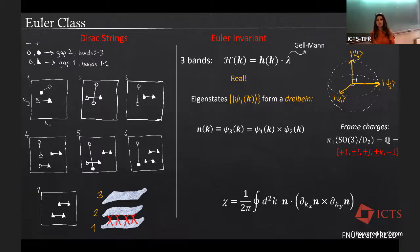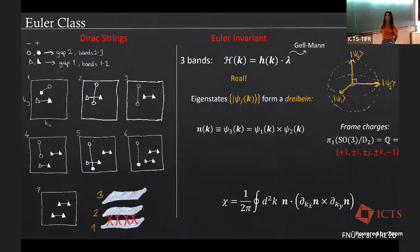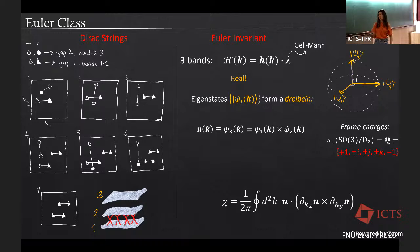Excuse me — yes, the Nielsen-Ninomiya theorem is okay here, because Nielsen-Ninomiya looks at a single gap. Usually when I have a single gap I have plus or minus chirality charges, but here I need the other gap — these are Dirac cones on their own, but it's really the full spectrum that matters.